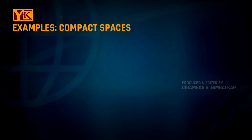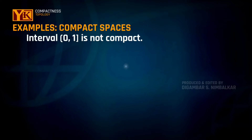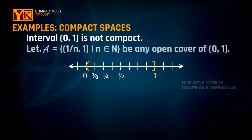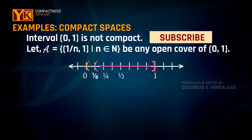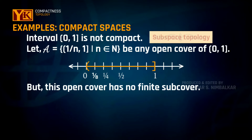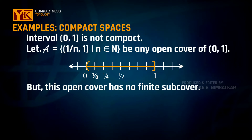Welcome. This is the next video in the topology series and will continue with examples of compact spaces. Let us start with the example: the interval open at 0, closed at 1 is not compact. To see why, consider the collection of intervals open at 1/n, closed at 1, where n is a natural number. This collection serves as an open cover for the interval, but there exists no finite sub-collection of this open covering which will cover the interval (0, 1].